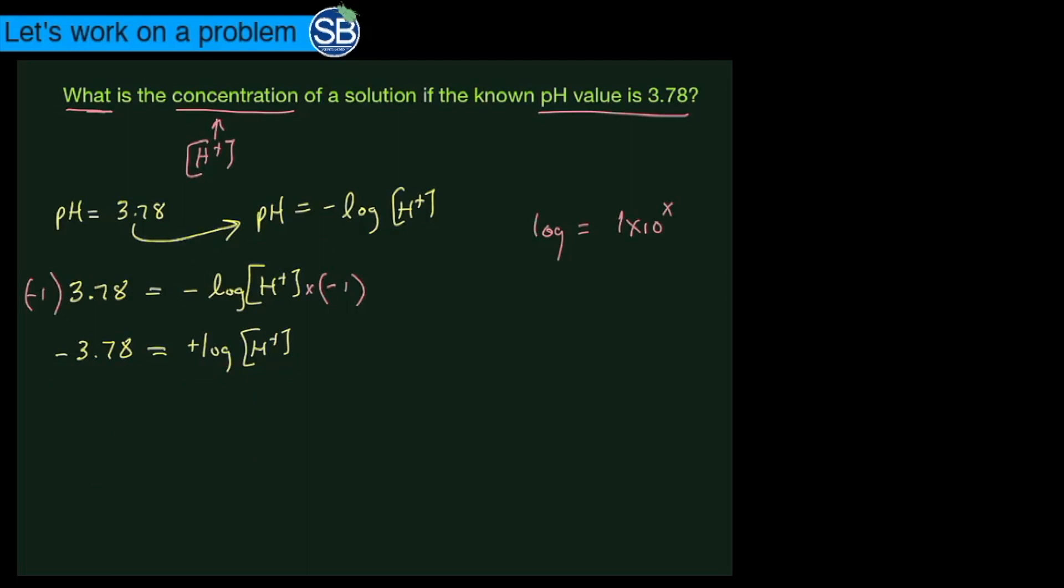What we're going to do is we're going to raise both sides to that power of x. In other words, we're going to take the log of both sides by using that 1 times 10 to the x formula. Let's just denote what we said before - if this is equal to x and this is equal to x on the right-hand side, then we can rewrite the equation.